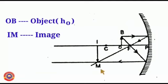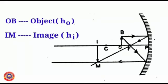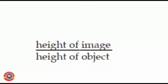I M is the image and let it be H I. Measure the height of the object and height of the image. Using this, we can calculate the ratio of height of the image to the height of the object.